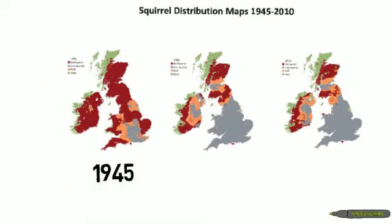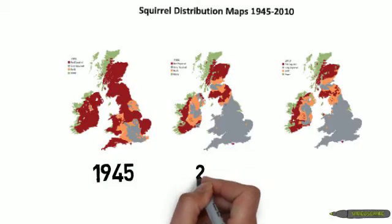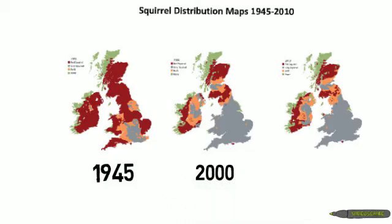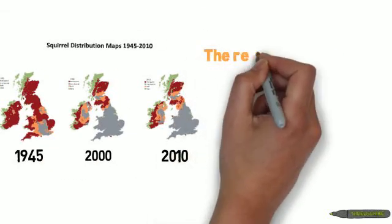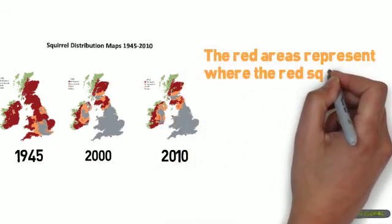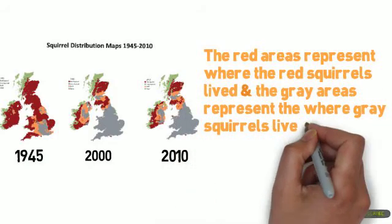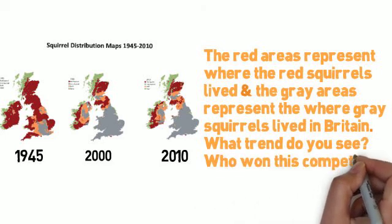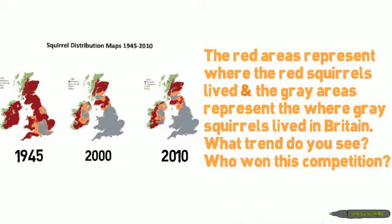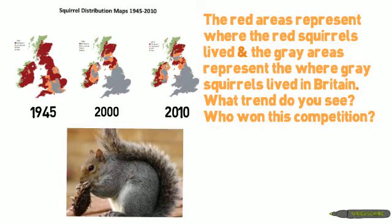This map shows Britain in the years 1945, 2000, and 2010. The red areas represent where red squirrels lived, and the gray areas represent where the gray squirrels lived in Britain. What trend do you see? Who won this competition? As you can see in the maps, the gray squirrels occupied the southern part of Britain in 1945, and then started to invade other parts of Britain in later years.